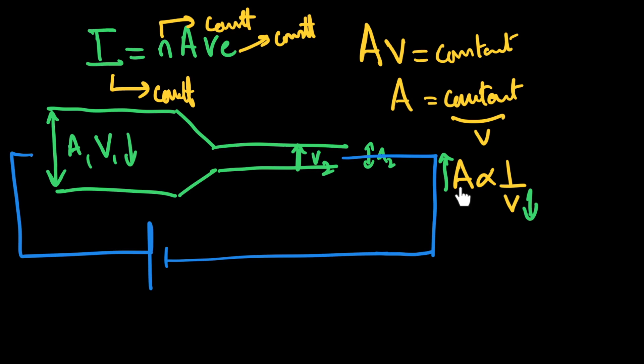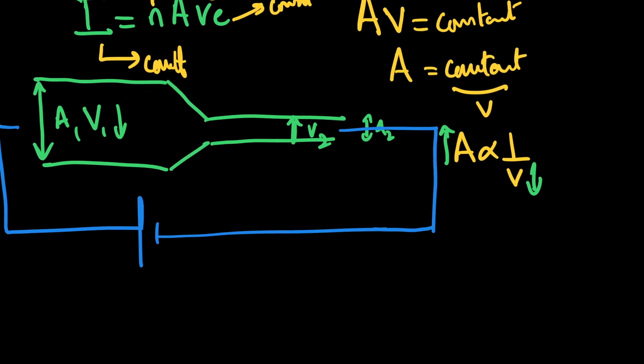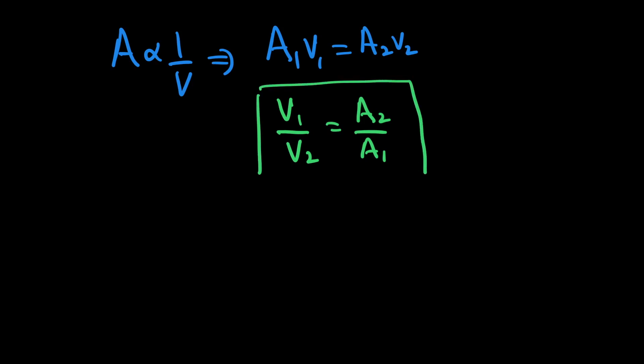Once you've understood this concept of area and speed being inversely related, very important questions come from this. If you understand that area and speed have an inverse relation, then area 1 into speed 1 must be equal to area 2 into speed 2. In the question they can ask you to find out the ratio of the speeds. If they ask you to do that, then V1 over V2 would be equal to A2 over A1.